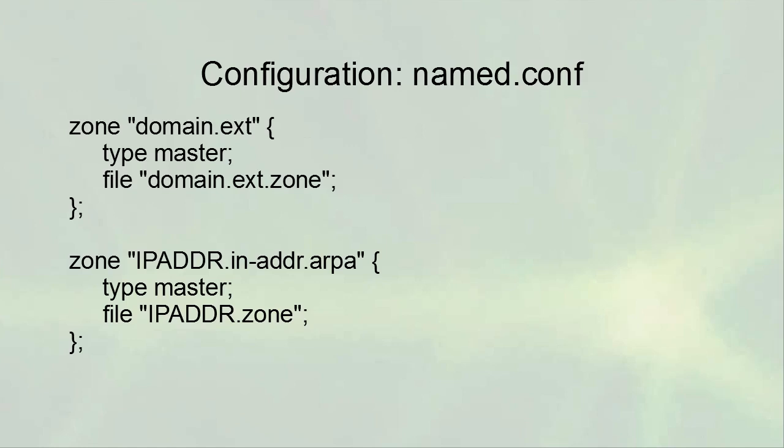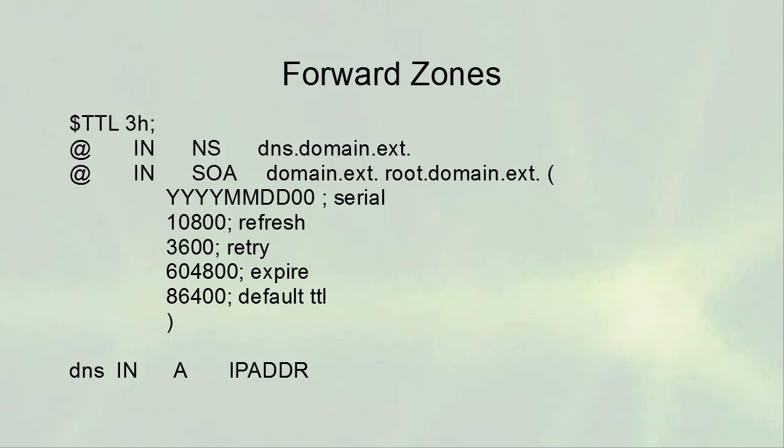Forward zones use names as lookups; reverse zones go from IP addresses back to names. Forward zones have multiple different types of records. Here's an example forward zone — the very top line is '$TTL 3h', meaning the default time-to-live for each entry is three hours. This can be overridden. Then you see the '@' sign, which means 'for the entire zone.'